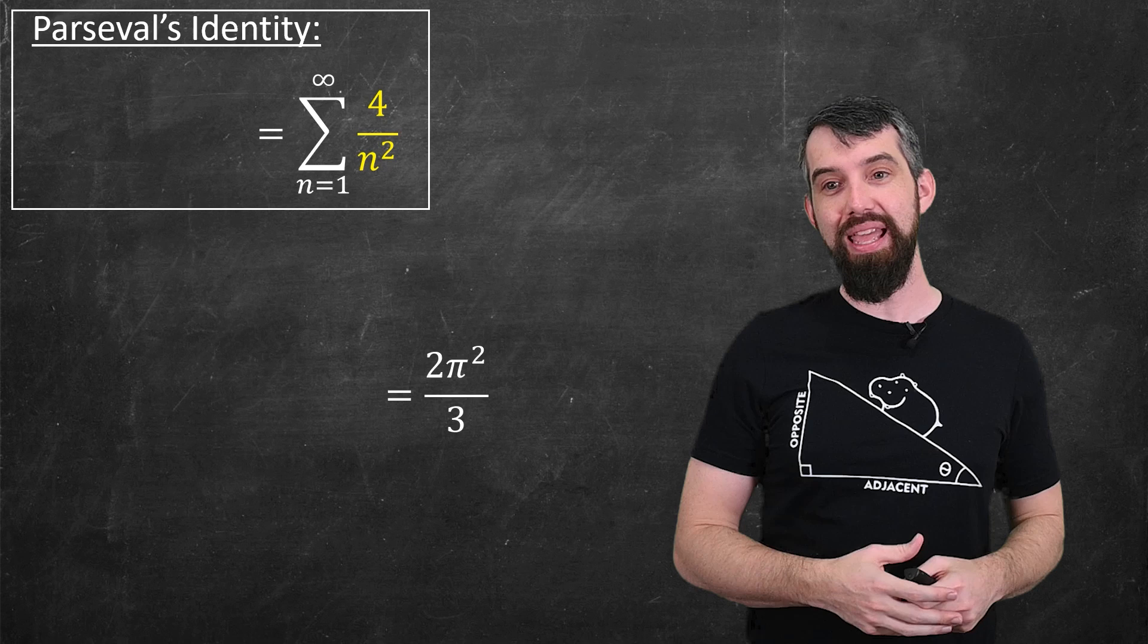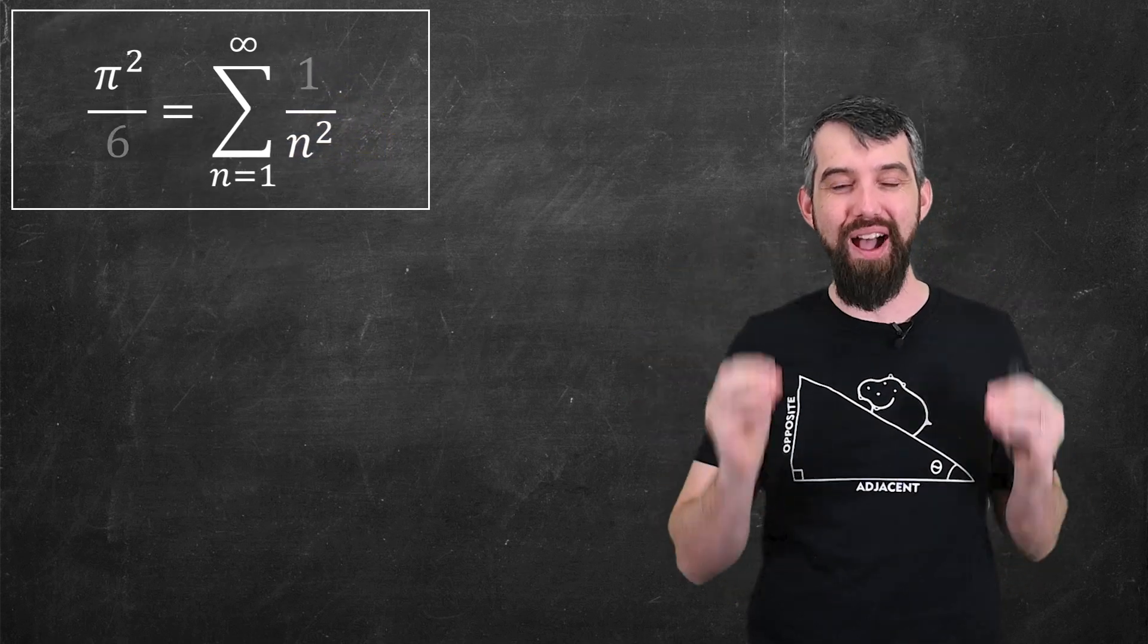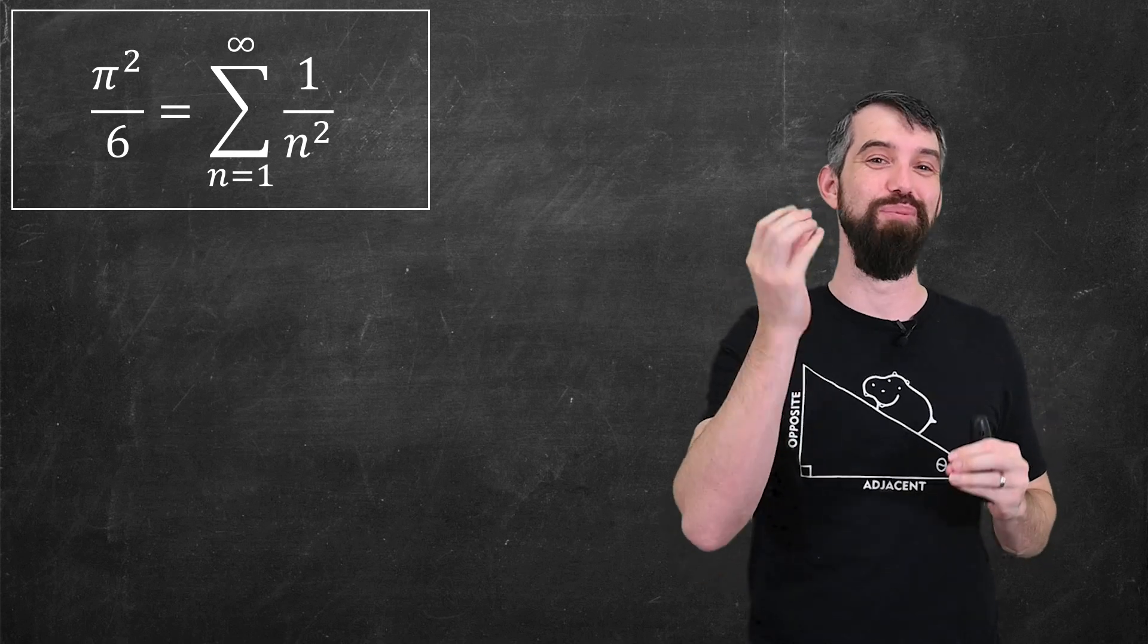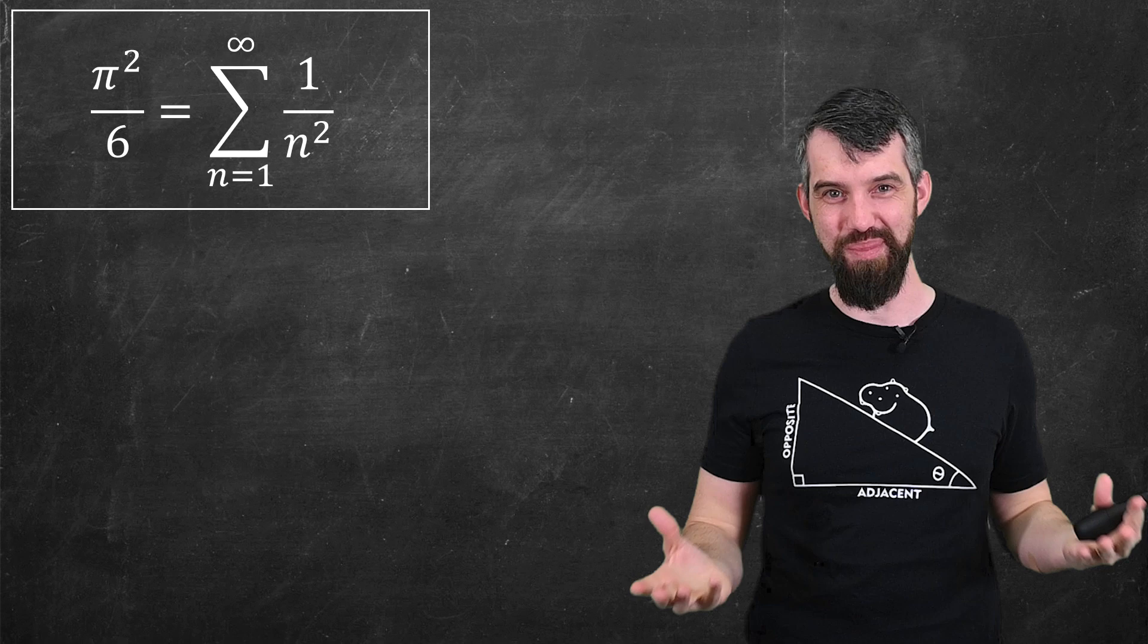All I have to do is plug that in. I see that I have a 4 on the right-hand side. I'll divide out by that 4, and I finally get the formula I wanted. π²/6 is the sum from 1 to infinity of 1/n². Kind of a cool formula.